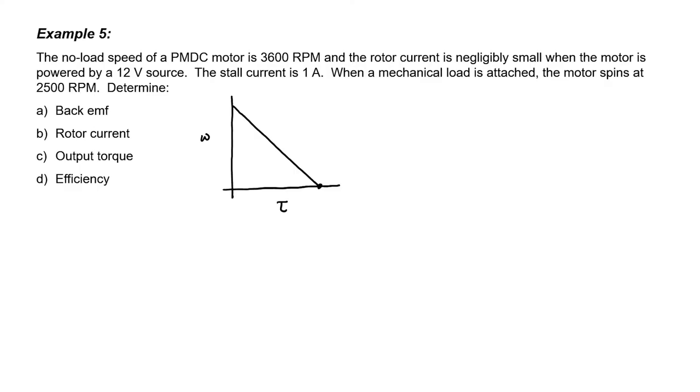As you decrease the mechanical load on the motor, it spins faster and faster until it reaches its no-load speed or its maximum speed. We're given these two points on the graph here. We're told that the stall current is 1 ampere, and it's relatively easy to convert current into torque if we know the torque constant. We're given the no-load speed directly. When the mechanical load is attached and the motor is spinning at 2,500 RPMs, we're going to be operating at some point along this line. This entire line is valid for 12 volts.